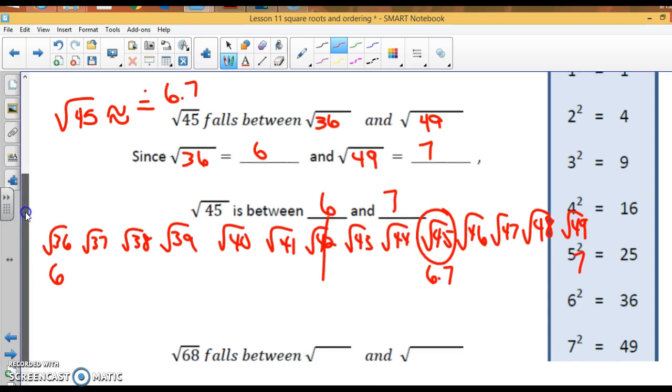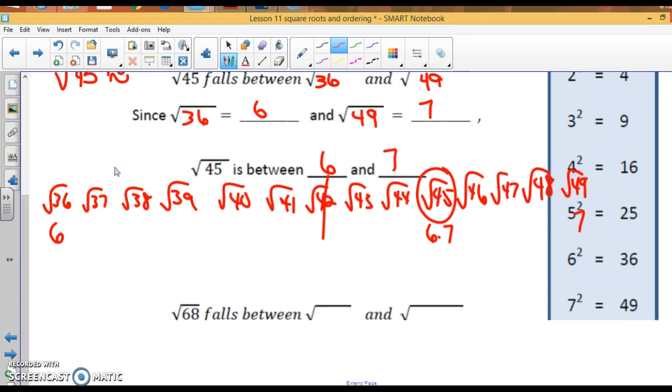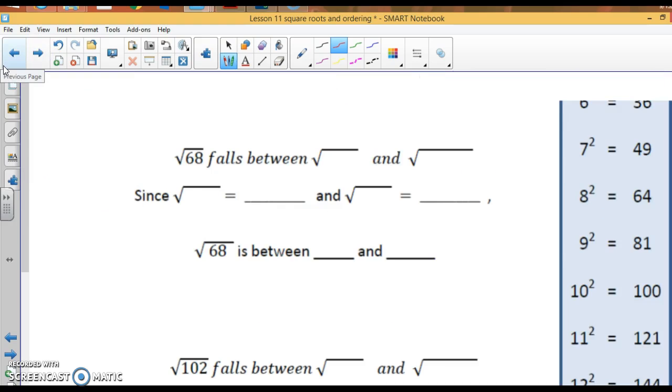Now, let's take a look at this next one. The square root of 68 falls between 64 and 81. Since the square root of 64 is 8 and the square root of 81 is 9, doesn't the square root of 68 have to be between 8 and 9? Now, let's look at this. The square root of 68 is much closer to the square root of 64 than it is 81. So, I'd say this would be like maybe 8.1 or 8.2 approximately equal to.